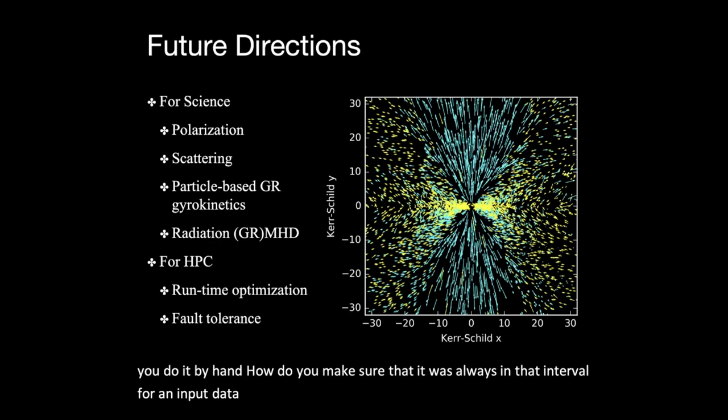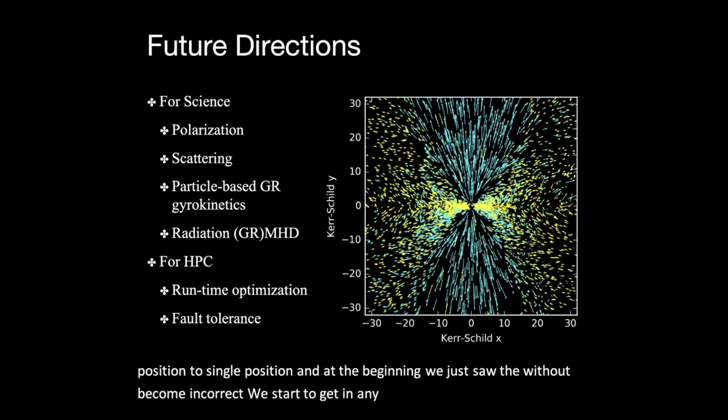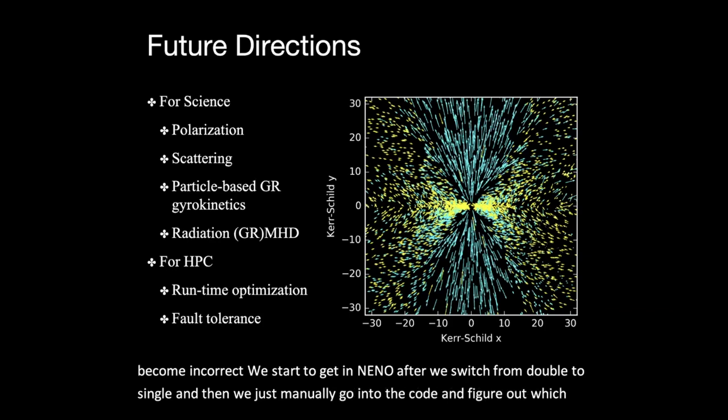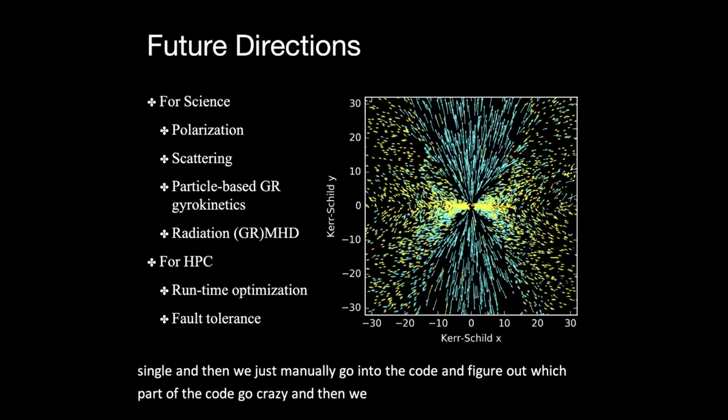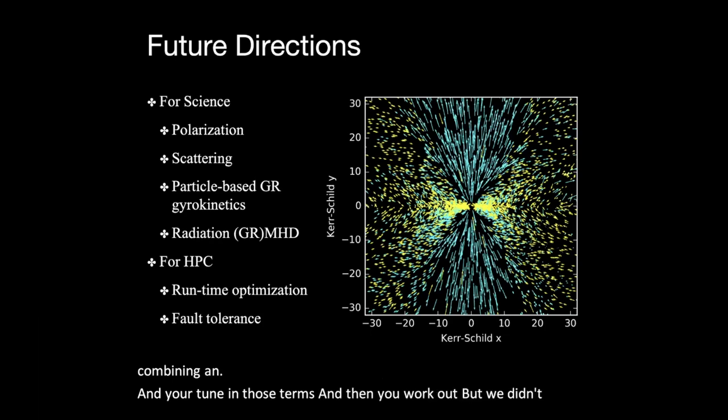Yeah. So we were lucky enough to have some Tesla GPU back when we first did the development. The development was done in double precision, but then we typed our double and float to another type called real. And then we can just by changing a single line, we can change from double precision to single precision. And at the beginning, we just saw the result become incorrect. You're starting to get NaN and zero after we switch from double to single. And then we just manually go into the code and figure out which part of the code go crazy. And then we find out it's mostly the radiative transfer calculation. And then we start manually recombining and tuning those terms and then it worked out. But yeah, we didn't do anything fancy. It's a manual process.